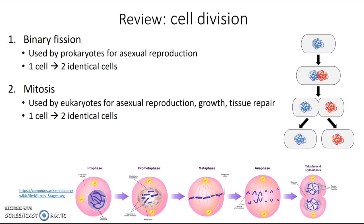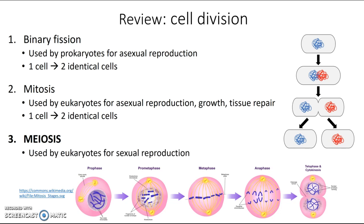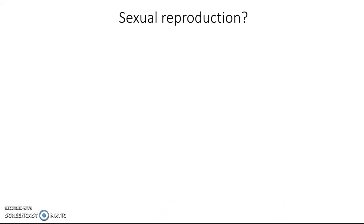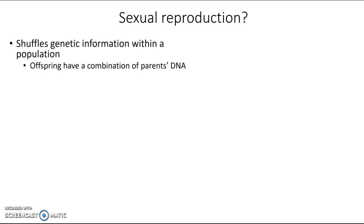The third type of cell division that we only mentioned very briefly before was meiosis. This is the cell division process used by eukaryotes for sexual reproduction. The benefit of sexual reproduction is that it shuffles genetic information within a population, so rather than being identical to their parents, offspring have a combination of their parents' DNA.